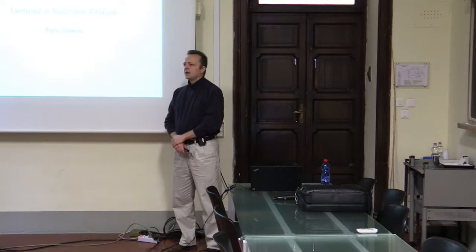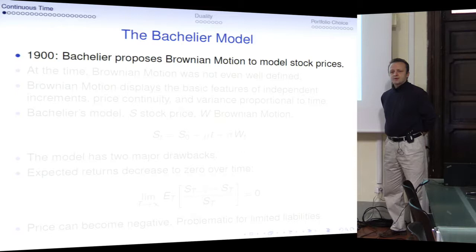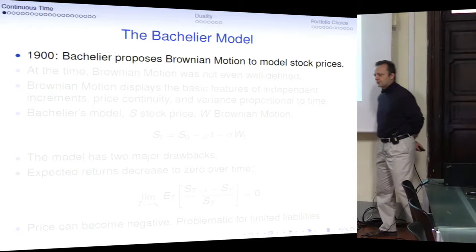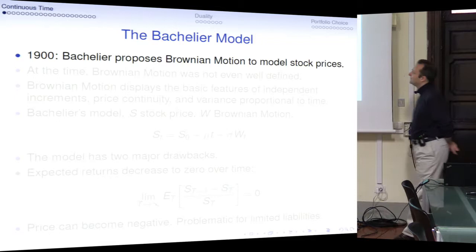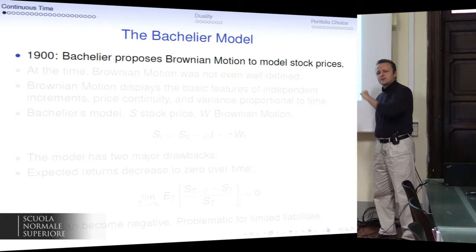Welcome to this lecture in Stochastic Finance. I'm going to cover the basics in continuous time finance, and in the next lectures we are going to move on to portfolio choice and the basics of stochastic control. Let's start with the simplest of all continuous time processes for stochastic finance, which is the Bachelier model. It is even older than the use of Brownian motion for physics, and it goes back to the French mathematician Louis Bachelier, who first proposed Brownian motion possibly with drift as a model for stock prices.